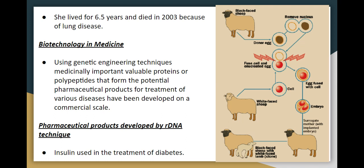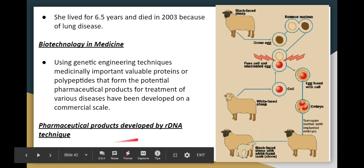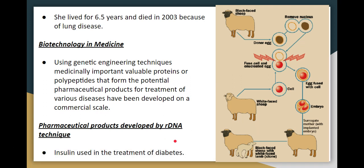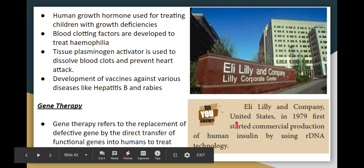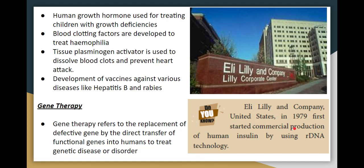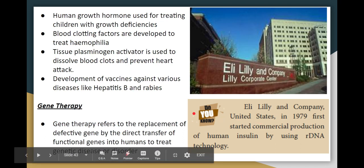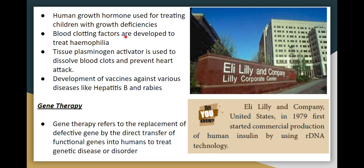Biotechnology is used in medicine through proteins. Protein chains, which are polypeptides, are used to treat various diseases and develop pharmaceutical products on a commercial scale. For example, insulin for diabetes was produced using R-DNA technology by Eli Lilly & Company in 1979 as the first commercial production of human insulin. Human growth hormone is used for growth deficiency, and blood clotting factors are used to treat hemophilia.